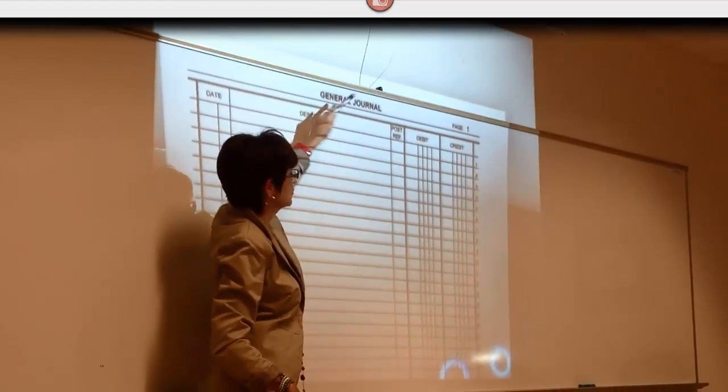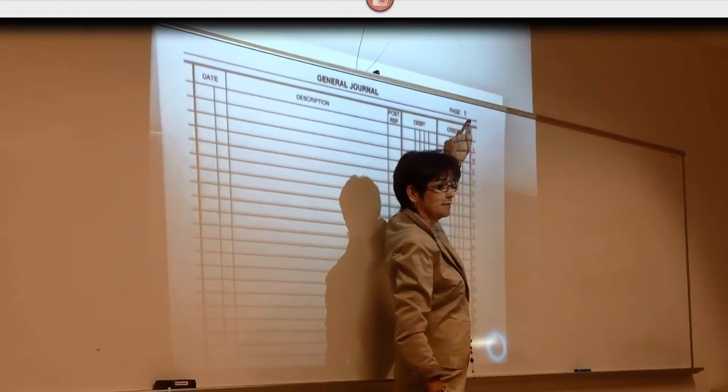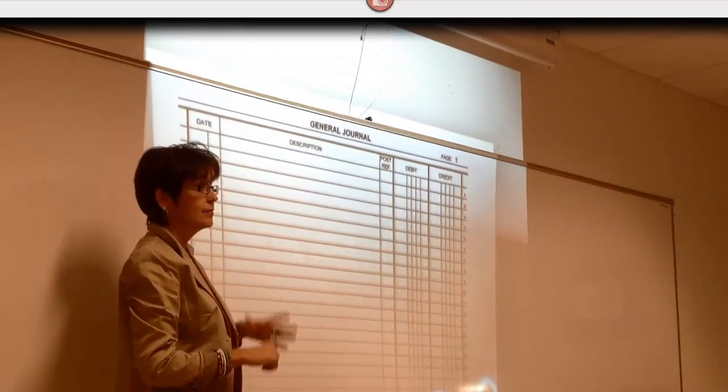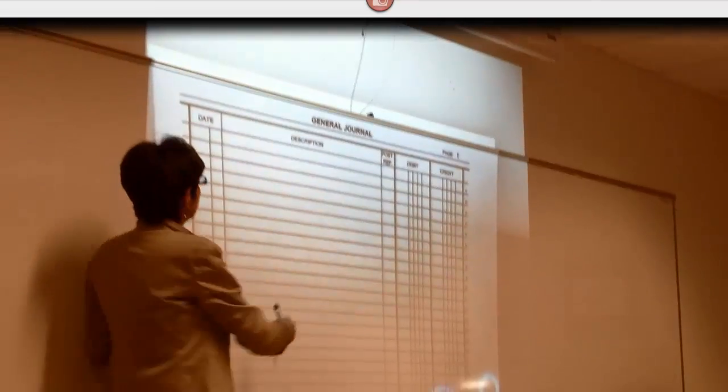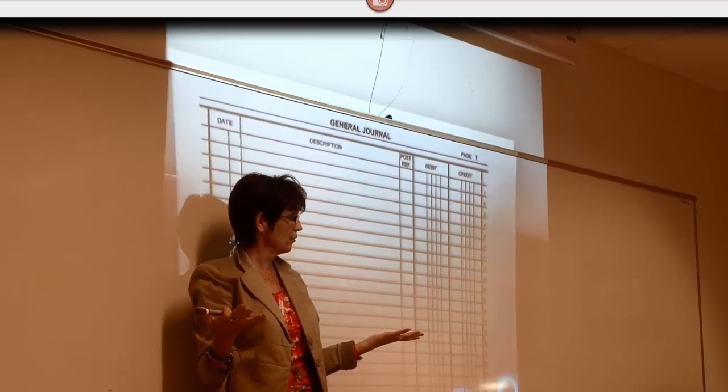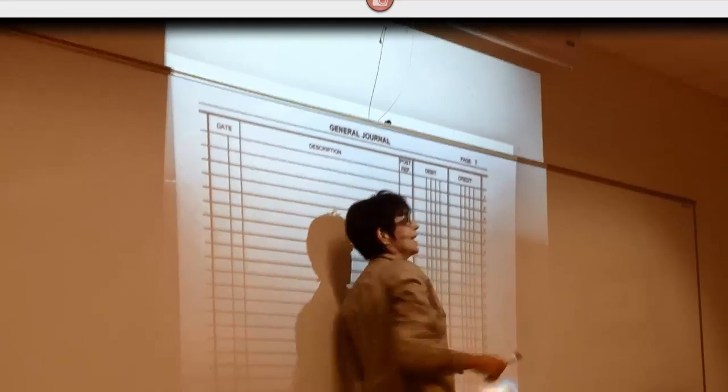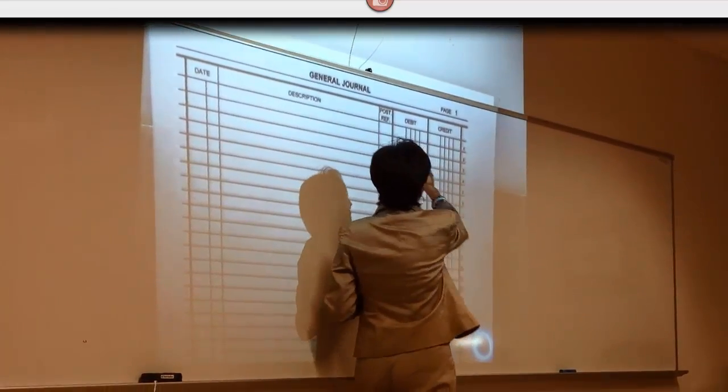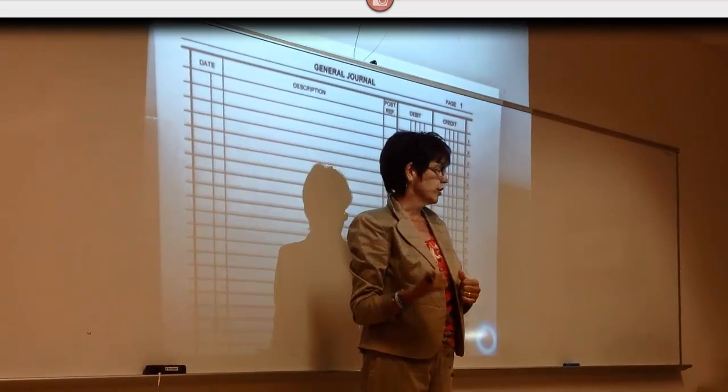We're going to call this the general journal. An example of what this journal is going to look like. There are several columns to this general journal. It starts at the top, it says general journal, and then it has a page number on it. It begins with the word date. Didn't we say that was something important? That we wanted to know when something happened. It also has a description. Is that something else that we said was very important? We'd like to know what did we spend this money for. The post reference, I want you to just save that for a few minutes. I'll talk about that in just a little bit. And then you have two columns that say debit and credit.